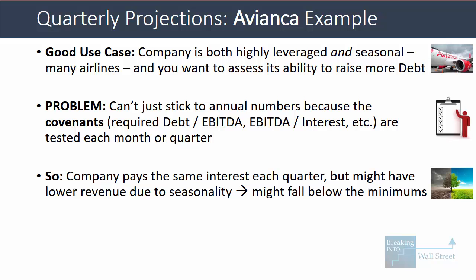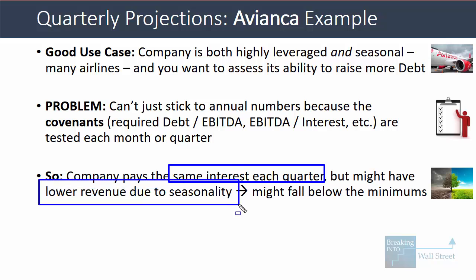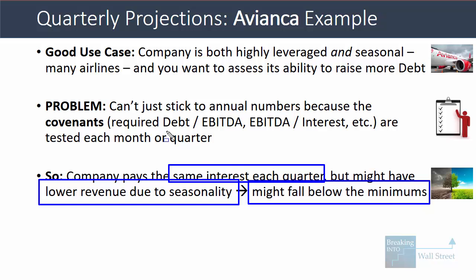The problem is that a company with approximately the same debt load over the course of a year is going to pay roughly the same interest each quarter. But in Q1 or Q2 for a retailer, revenue is going to be lower because of seasonality, and higher in Q4. So in Q1 and Q2, the weaker ones, the company's debt-to-EBITDA or EBITDA-to-interest might be below the minimum or above the maximum, and that could create problems even if those problems don't show up in an annual model.